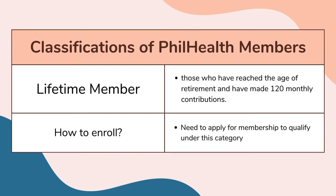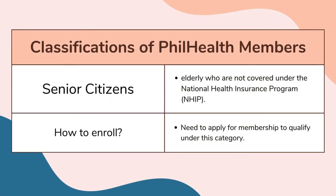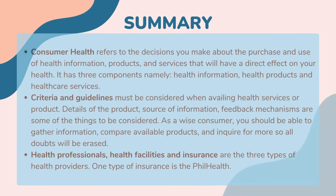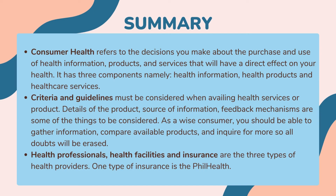Lifetime members are those who have reached the age of retirement and have made 120 monthly contributions — they need to apply for membership to qualify. Senior citizens are elderly individuals not covered under the National Health Insurance Program, and they also need to apply for membership. Once enrolled under PhilHealth, a member should declare his or her legal dependents so they can also be extended the same healthcare protection and benefits as the principal member.